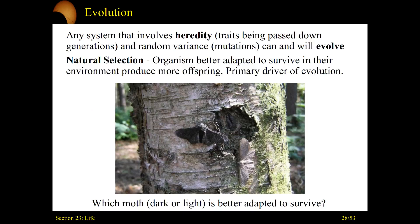So to recap: any system that involves hereditary information — traits passed down from generation to generation — and as long as there can be random variants or mutations, that system will evolve. Plain and simple: if there is information being passed along from generation to generation, whether it's a living organism or just some molecule going through chemical reactions, as long as there is variance and replication, evolution must happen.